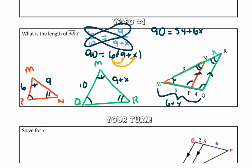So if we subtract 54 from both sides, we will get that 36 is equal to 6X. Using inverse operations, divide both sides by 6. So we get that X is equal to 6.